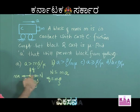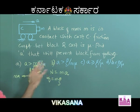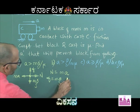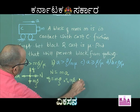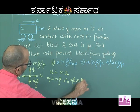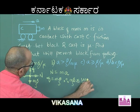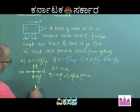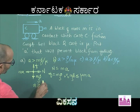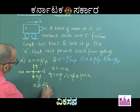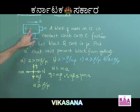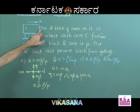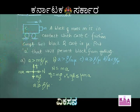But this friction being static, its value cannot be more than the maximum value of static friction, which is mu into N, and N is MA. Therefore MG should be less than or equal to mu times MA, which gives A greater than or equal to G by mu. If the cart moves with this acceleration, the block will remain at rest with respect to the cart and not fall down.